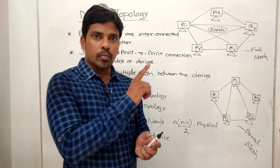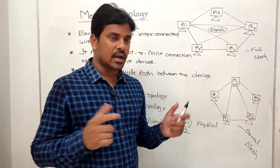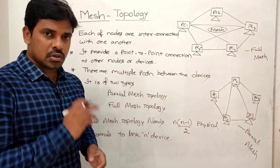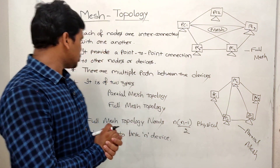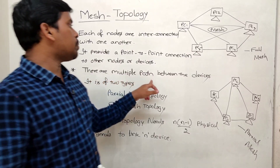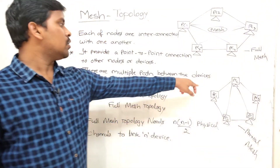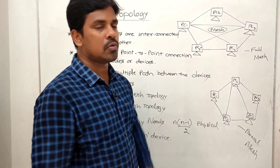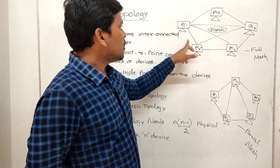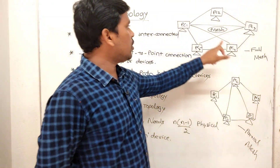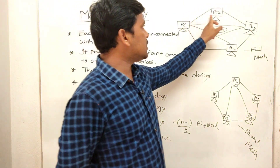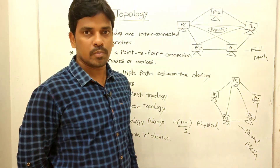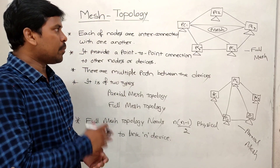Unlike ring topology which only connects to neighbor nodes, mesh topology provides multiple paths between devices. For example, between PC1 and PC4 there are multiple paths: via PC5, directly, or via PC2 and PC3.